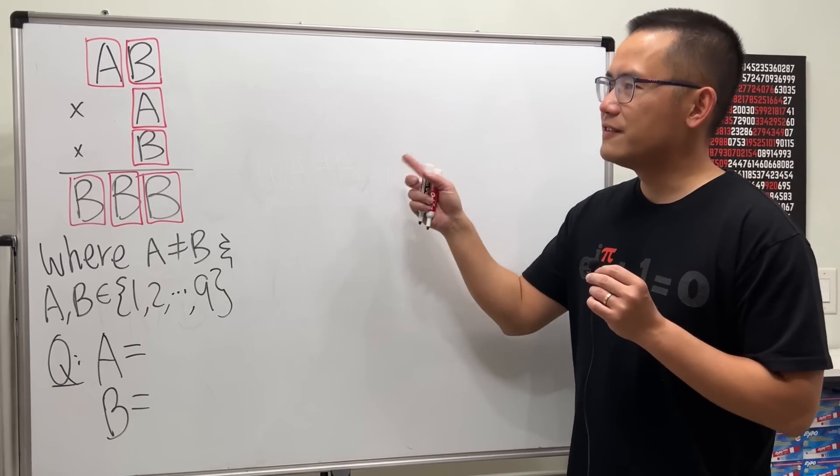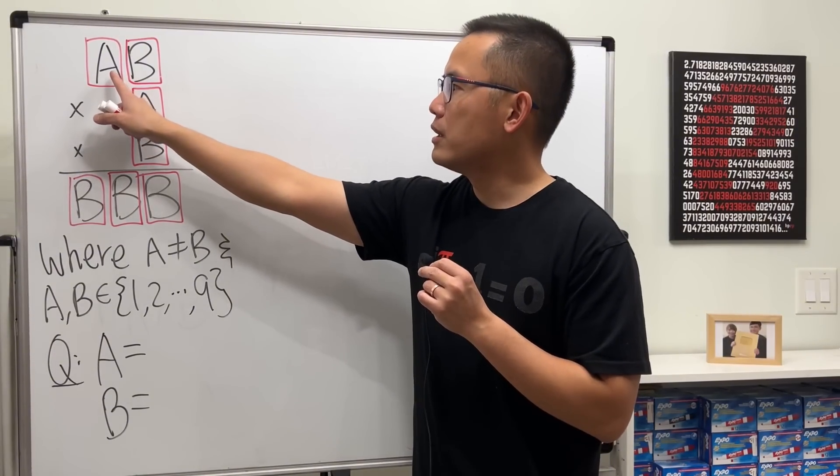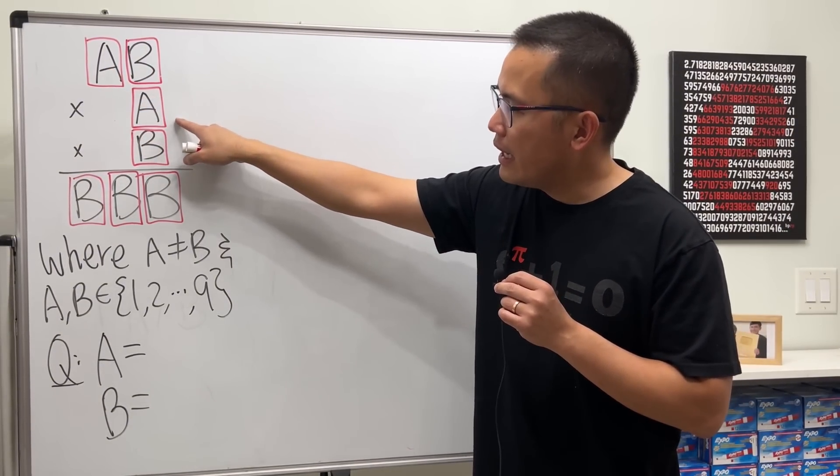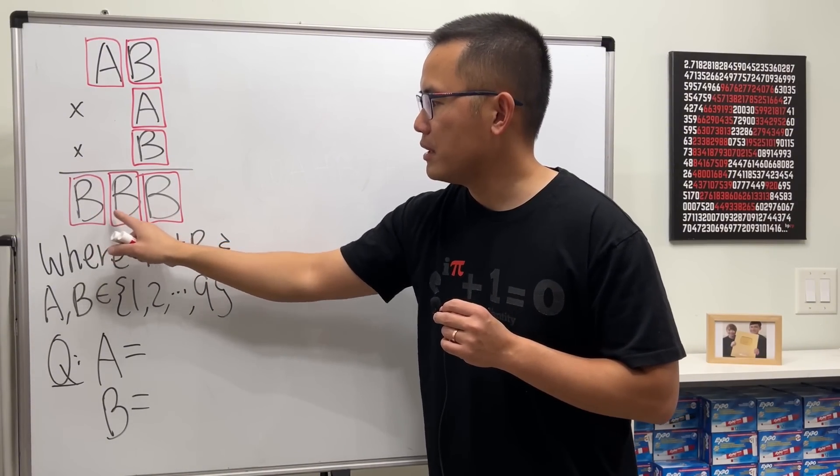Okay let's do some math for fun. Today I have this very classic math puzzle for you guys. First we have a two-digit number written like this AB, and then we are going to multiply this by A and then B. We see it's going to be a three-digit number written like this BBB.